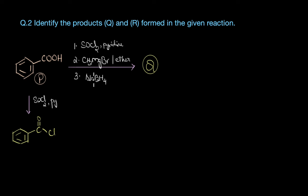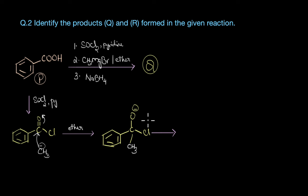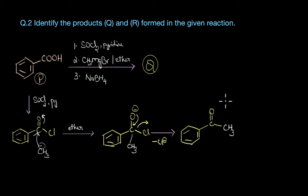In the second step, we are reacting this acid chloride with a Grignard reagent CH3MgBr. A nucleophilic addition reaction takes place where CH3⁻ from the Grignard reagent attacks the carbonyl carbon of the acid chloride, giving a tetrahedral intermediate. The double bond gets restored and with elimination of a chloride ion we get the ketone as the final product. Remember, whenever there is no mention of how much Grignard reagent is taken, we assume one equivalent, because excess Grignard reagent would further attack the keto group and give a tertiary alcohol.